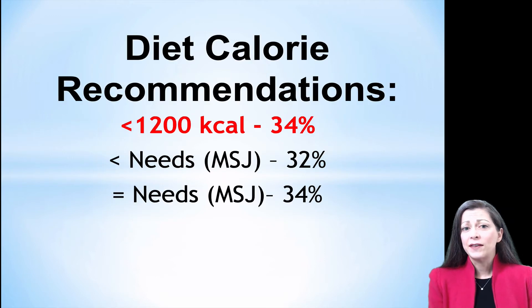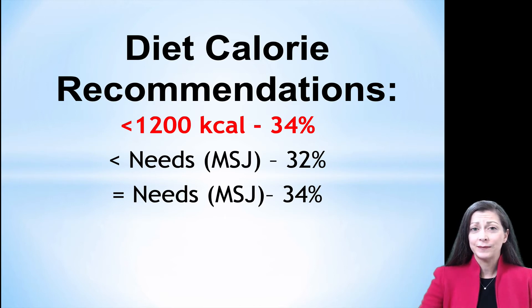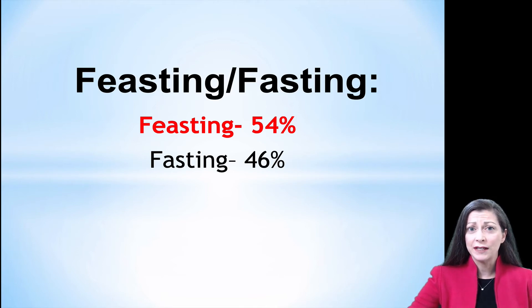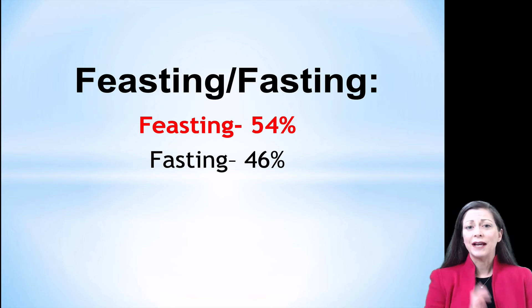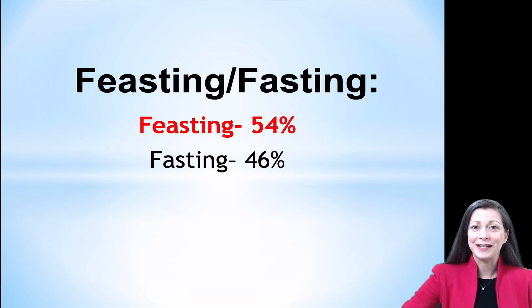Of the diets reviewed, 34% were recommending less than 1200 calories a day — that would be considered a very low calorie diet, putting a person at risk for decreasing their basal metabolic rate. About 46-54% of the diets were promoting a fasting state, and when people are in a fasting state, they're more likely to risk reducing their basal metabolic rate. This actually wasn't that bad when looking at it in general terms.